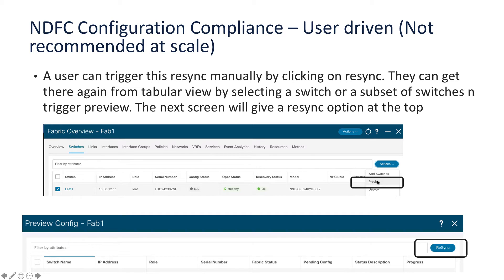The user-driven resync option is accessed by going into the fabric, selecting a switch, choosing Preview or Deploy under Actions, and clicking on the Resync option. However, if a switch has 20,000 to 30,000 lines of running config, doing a show run all is an expensive operation — it can take four to five minutes — so running this at scale may take too long. Hence, this option is not recommended for large fabrics.